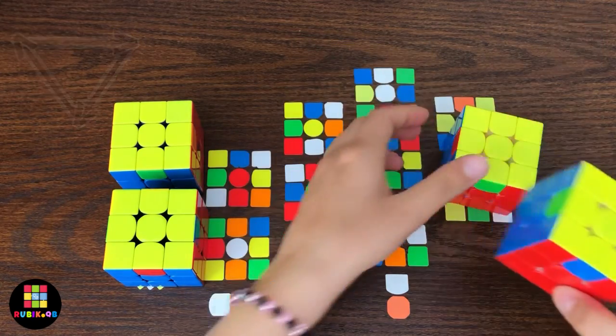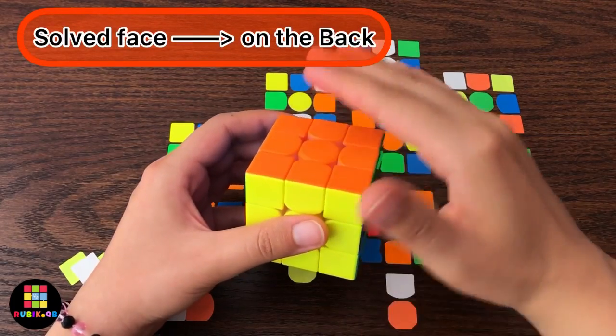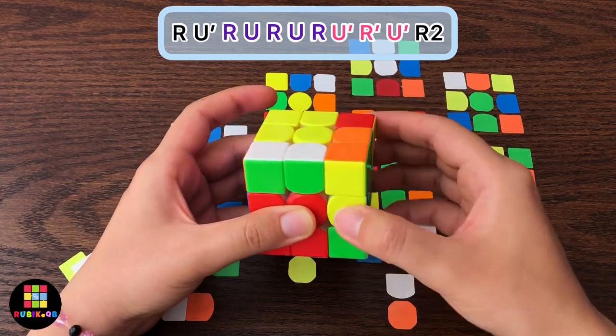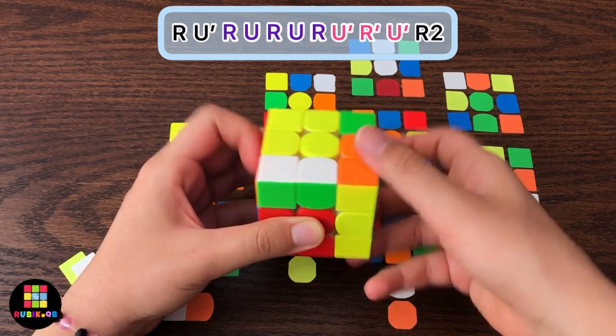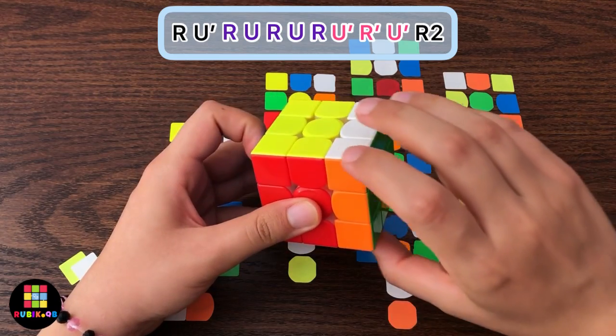Alright, hold the solid face on the back and then do the algorithm: R U' R' U R U R U' R' and connect this corner to this edge and then U' R2.